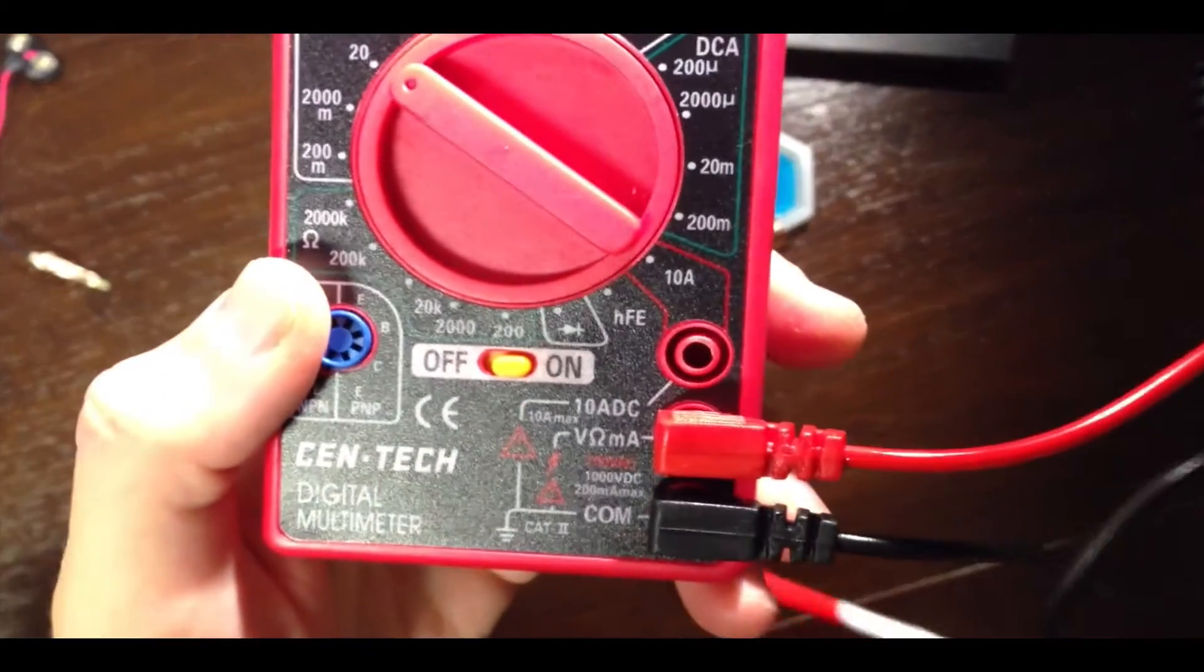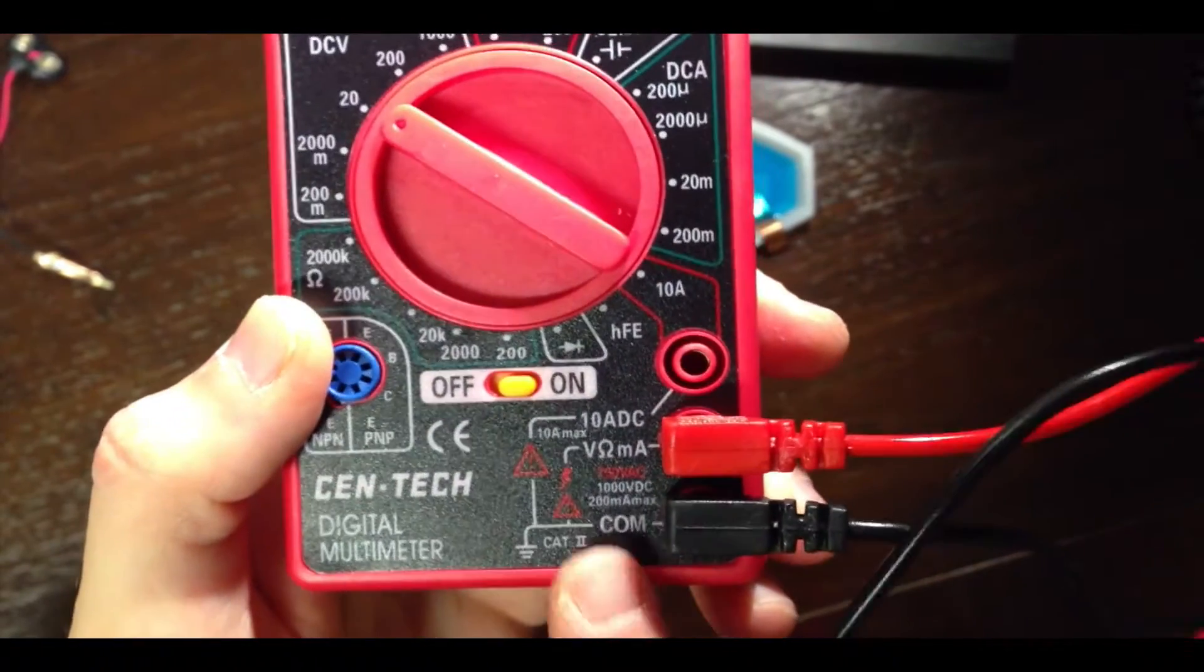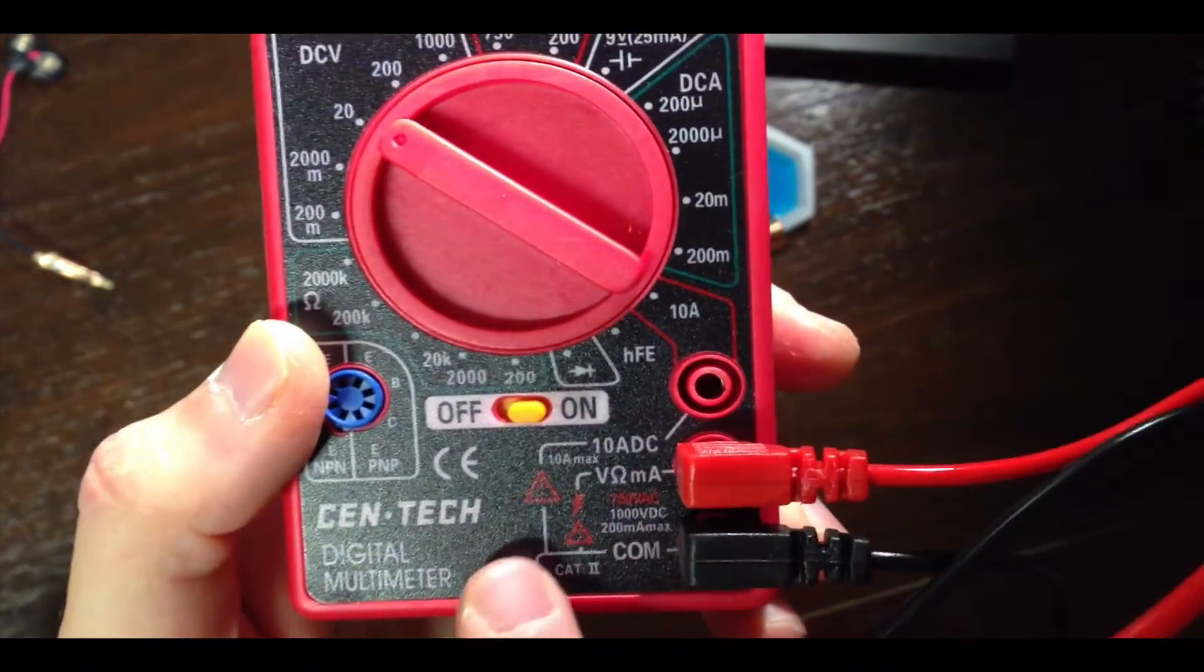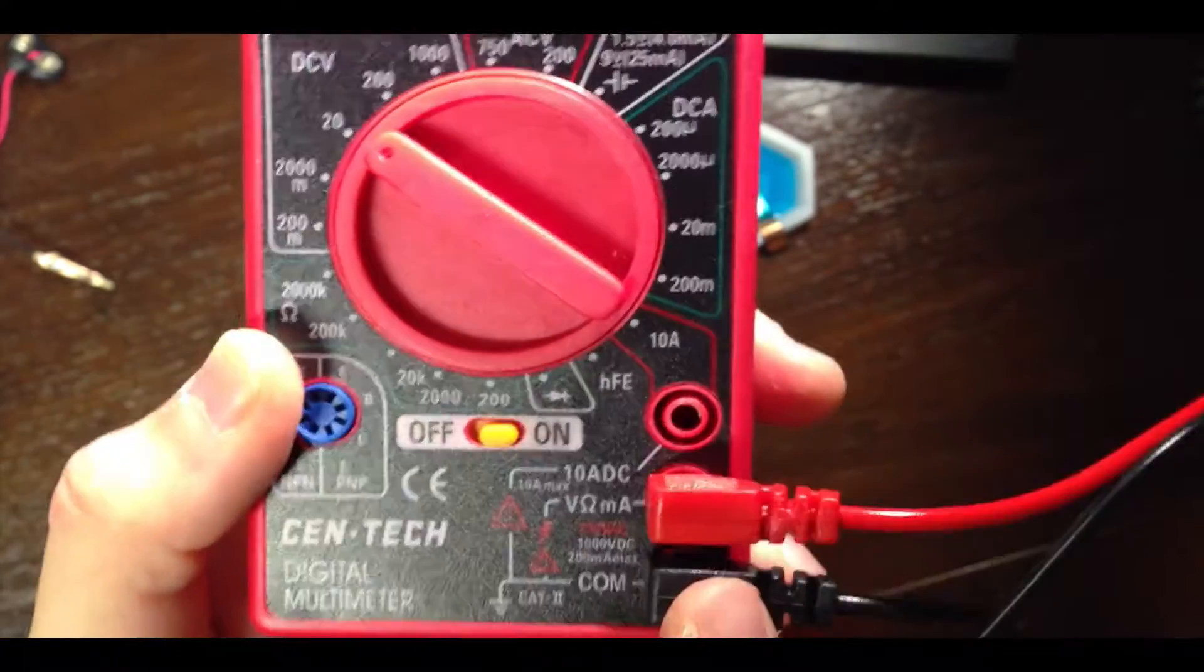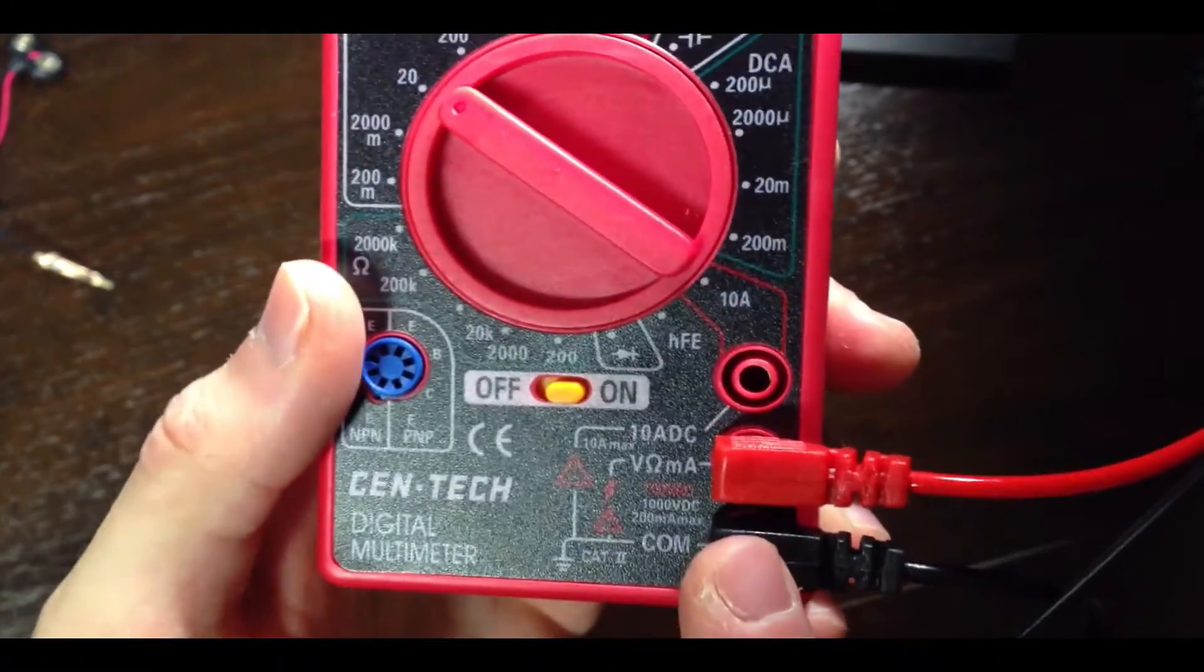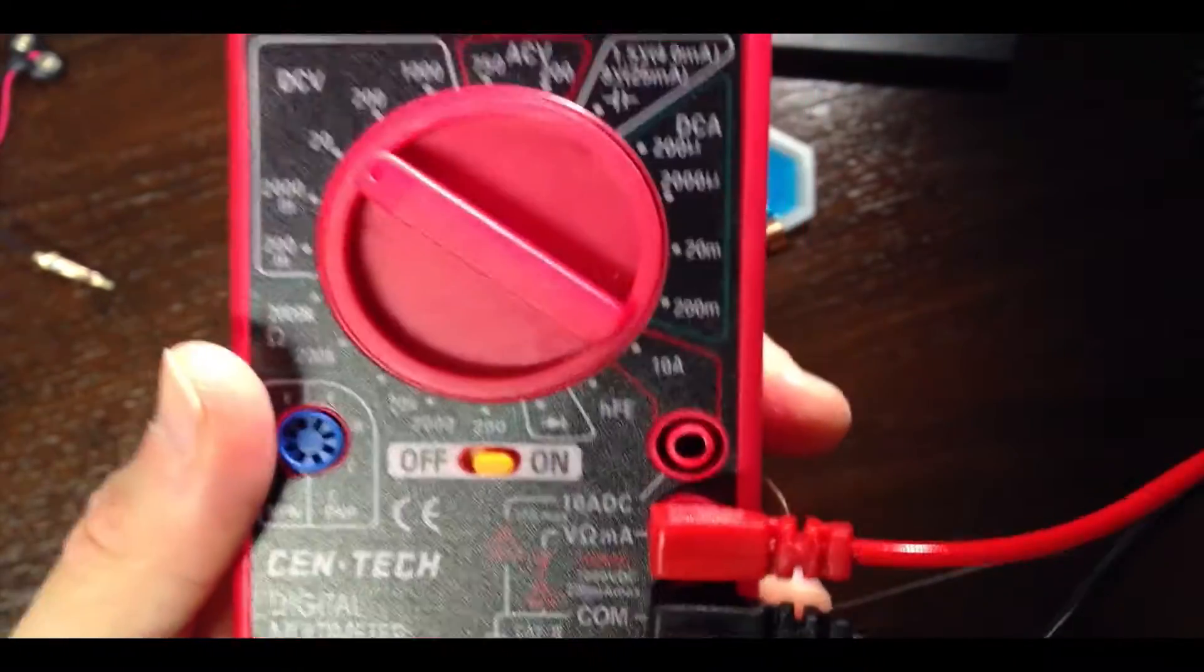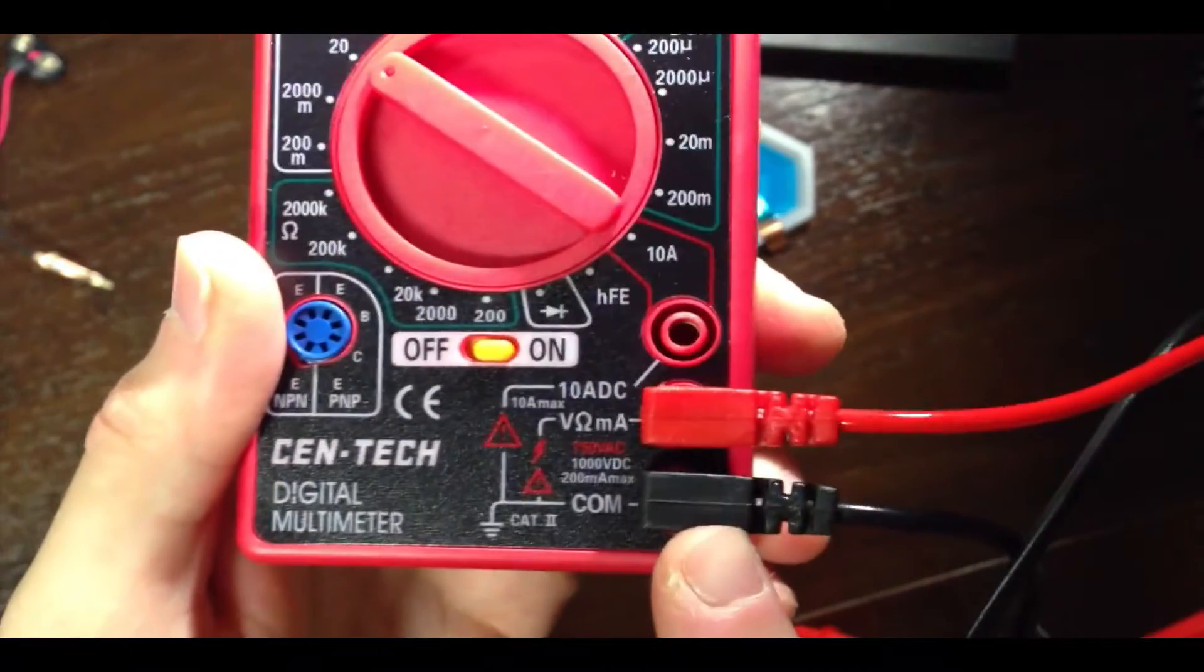At the very bottom, we have a black cord plugged in, and this is labeled COM or common. This black lead is connected to what's called ground, and this is defined as zero volts. The black lead should always be plugged in at the COM port. Basically, it's never going to move, no matter what you're measuring. We call this either the common lead or the negative lead.